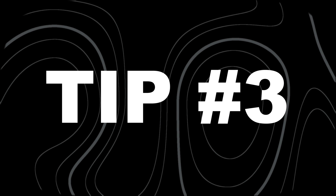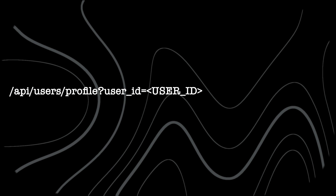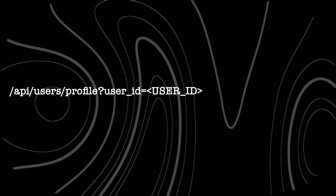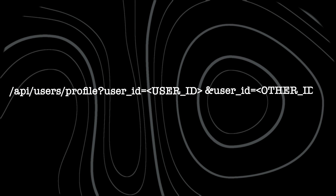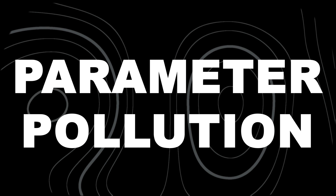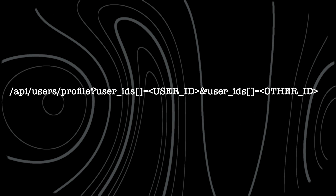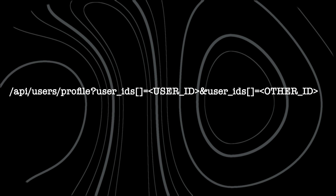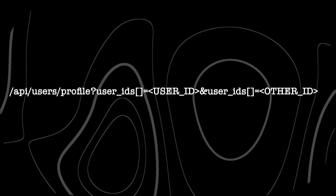Moving on to our next tip — consider a common request with a user ID parameter. If you can't find an IDOR on the user ID parameter, try adding another user ID into the mix. This technique is called parameter pollution. Another variation involves lists: switching the parameter to an array format. If the backend is not strictly validating the input type, you might gain access to multiple users' data.